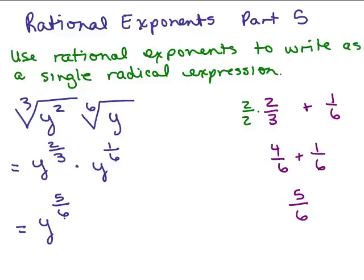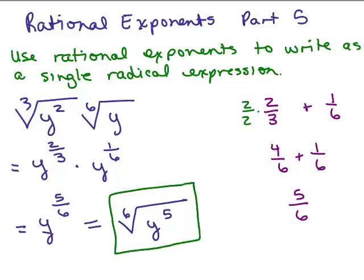Now remember, what I'm trying to do is write this as a single radical expression. So y to the 5 sixth is a perfectly good answer, but I'm being asked to write this as a single radical expression. So the last thing is to go back and write this in radical form, which will be the sixth root, because 6 is in the denominator, of y to the 5th, and that's the answer. Often when you're doing these, you will end up having to get common denominators. But in this particular case, the base was the same. It would be a little bit different if they were not both y. You couldn't simply add the fractions because you have to have the same base to do that, but you would do a similar type of thing, and we'll get to those later in this video.